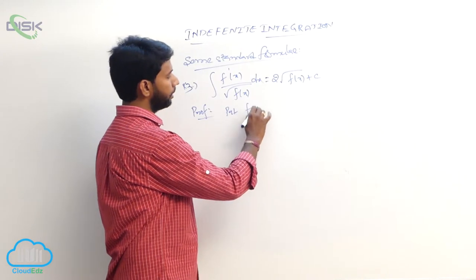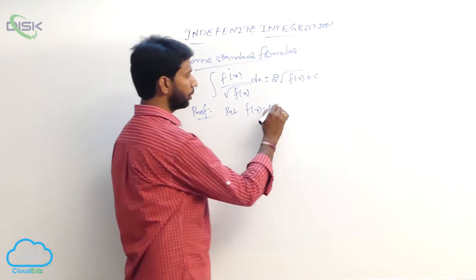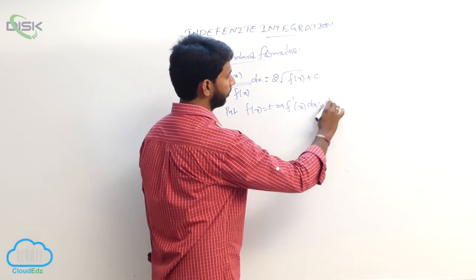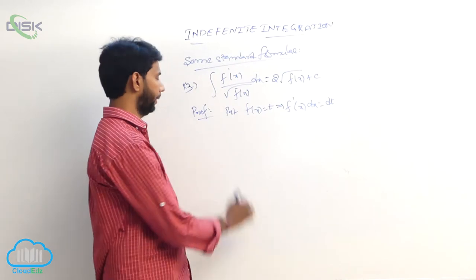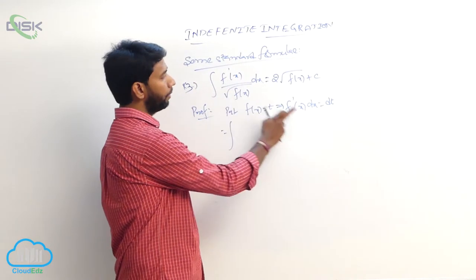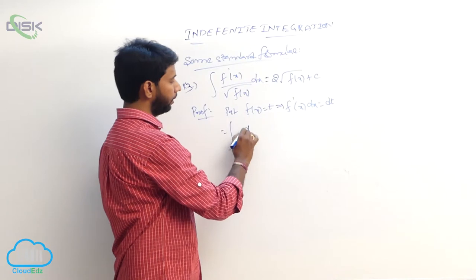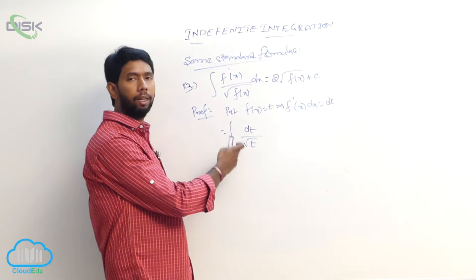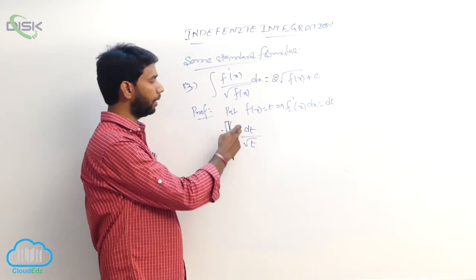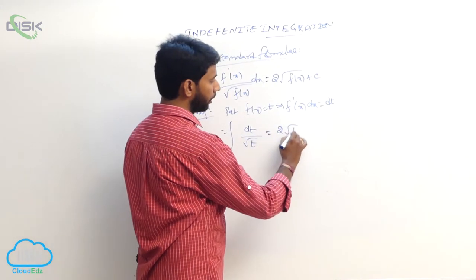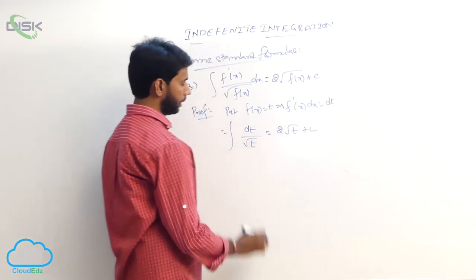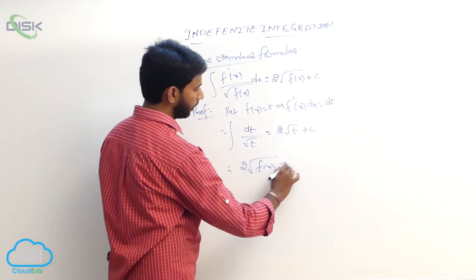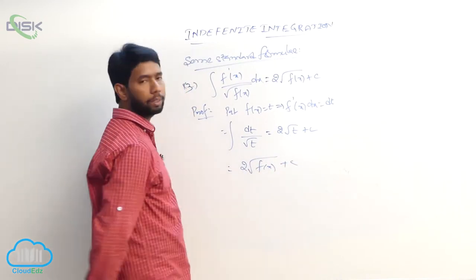Proof: substitute f(x) equal to t, differentiate to get f'(x) dx equals dt. The integral becomes integral of (1/√t) dt, which is of the form integral of 1/√x dx, giving 2√x. Therefore the result is 2√t plus constant, and substituting back: 2√(f(x)) plus constant.